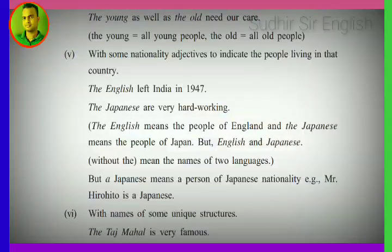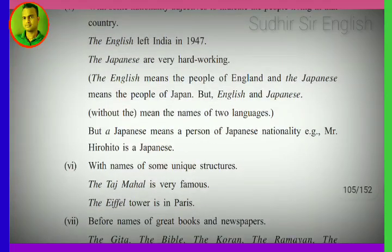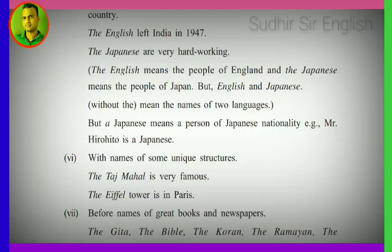Next: with some nationality adjectives to indicate the people living in that country, we use 'the'. 'The English' means the people of England; 'the Japanese' means the people of Japan. But 'English' and 'Japanese' without 'the' refer to the names of languages. 'A Japanese' means a person of Japanese nationality — for example, 'Mr. Hirohito is a Japanese.'